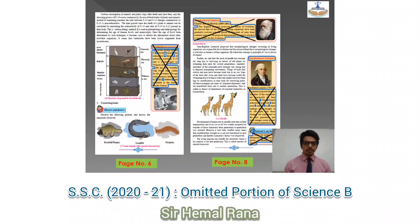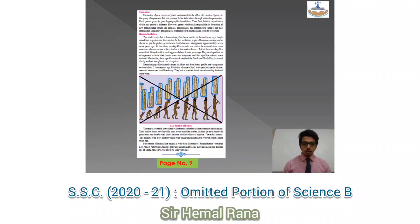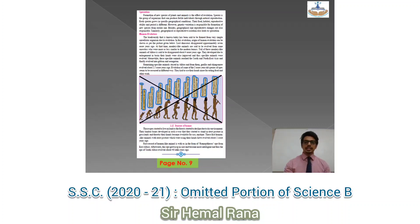On page number 6 we do not have 'Introduction to Scientist,' and we do not have 'Introduction to Scientist' on page number 8 as well. 'Lamarckism' — that part has been removed, and 'Internet My Friend' — that part has been removed. On page number 9, 'Journey of Humans' has been removed completely — that is just the diagram; the remaining part stays.